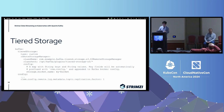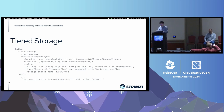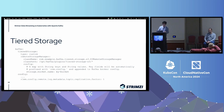In the Strimzy Kafka resource definition, we added a tiered storage section. For the remote storage part, we provide a class name parameter and a class path so you can bring in your plugin built into the Docker image. You can also provide any configuration for the remote storage manager. For the remote log metadata part, since the implementation is already in Kafka itself, you just configure it in the existing Kafka configuration section — for example, changing the replication factor. This is all you need to configure tiered storage for your Kafka cluster through Strimzy.